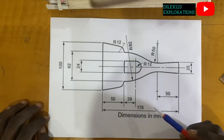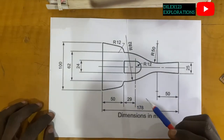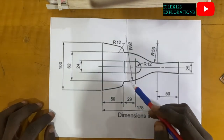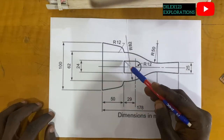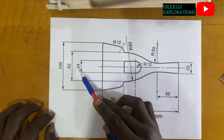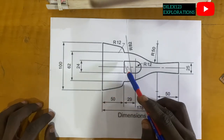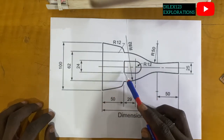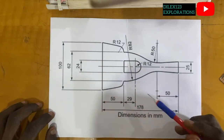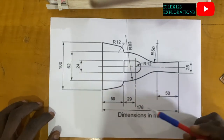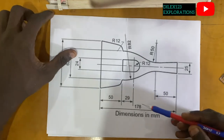Now let's produce these three lines. This is a vertical line that is 24 millimeters, and these two are horizontal lines — 29 millimeters each.